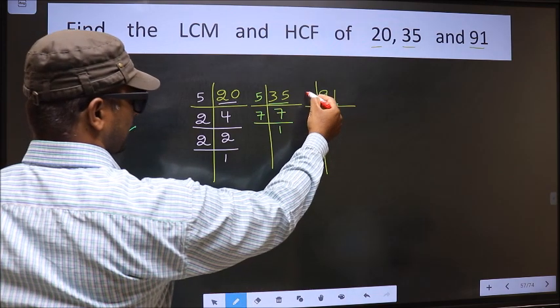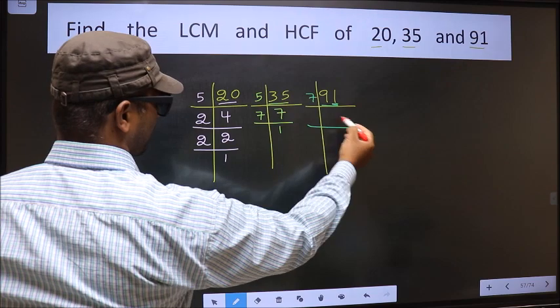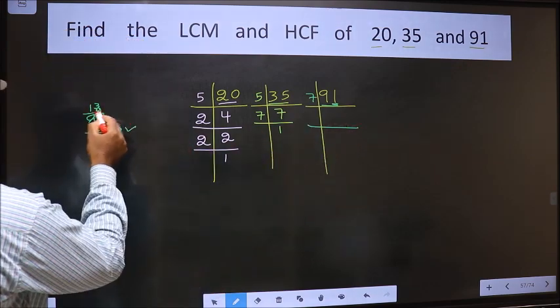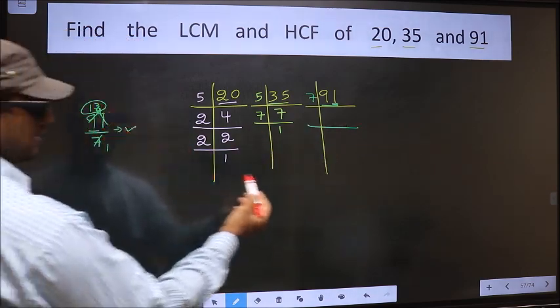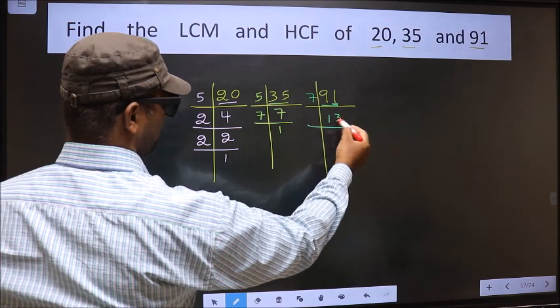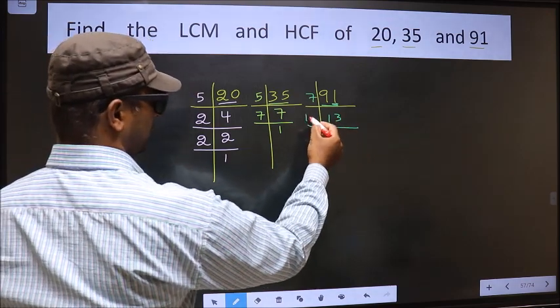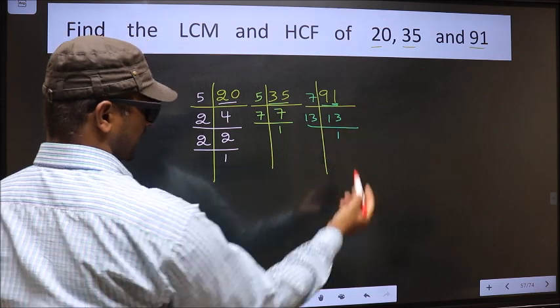So we take 7 here, and here we write this number, that is 13. Now here we have 13. 13 is a prime number, so 13 times 1 is 13.